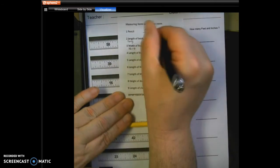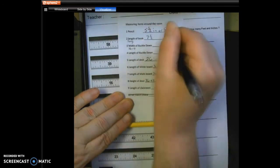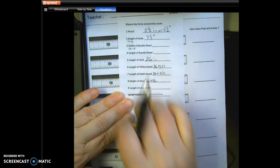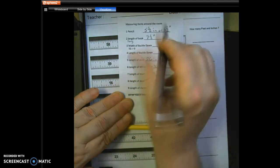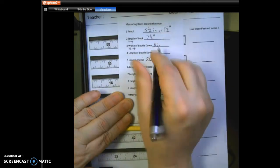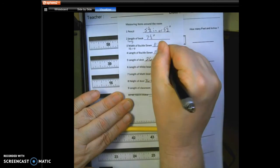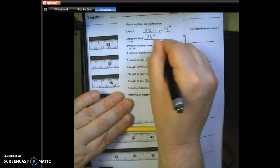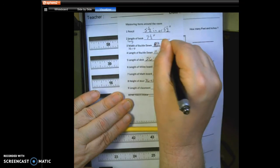So the length of the book was seven and a half inches. That's under a foot, so we don't have to convert that. The buckle-down book, the length was 11 inches, so we don't have to convert that. I'm sorry, that was the length down here. The width of it was eight and a half inches.